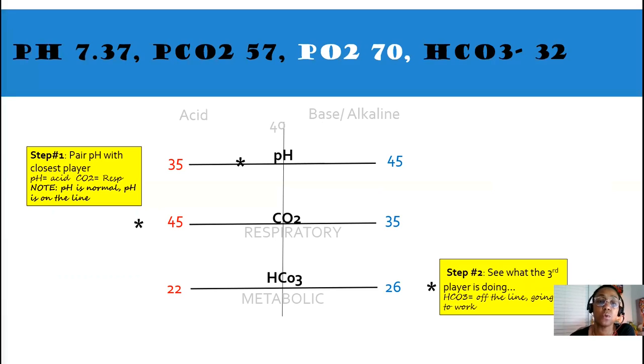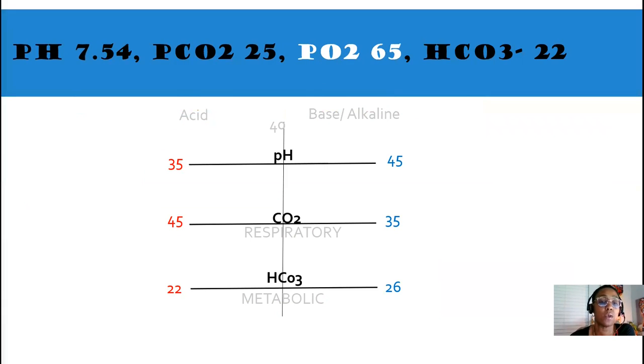Step number two, see what the third player out is doing. In this case, it's our bicarb. It's off the line, on its way to compensation. It's doing its job. Our interpretation is fully compensated respiratory acidosis with hypoxemia. These are the case when you do have a normal pH and you wondered what was the abnormality before it compensated. And, this is one way you could find out.